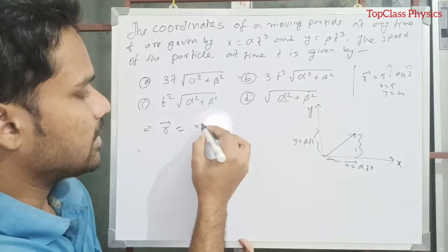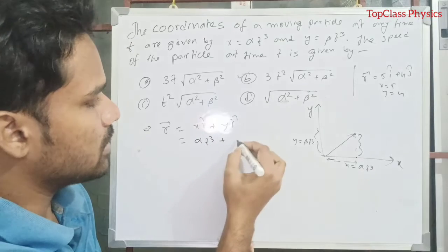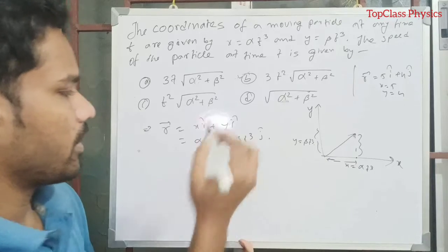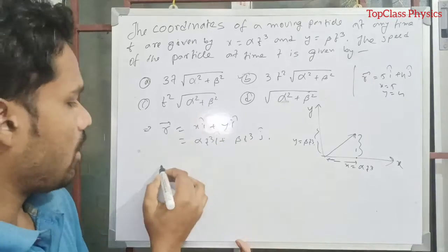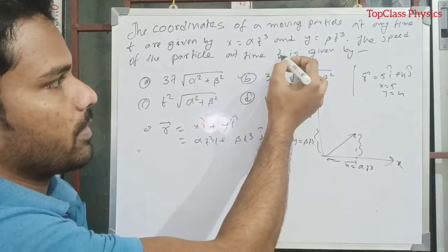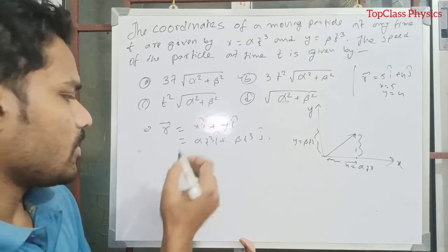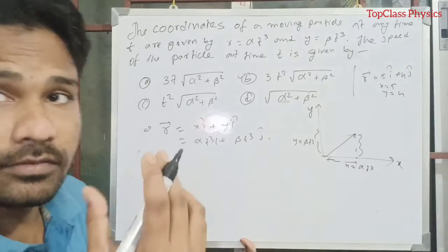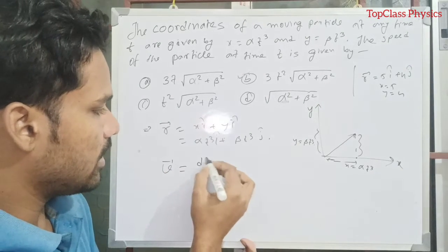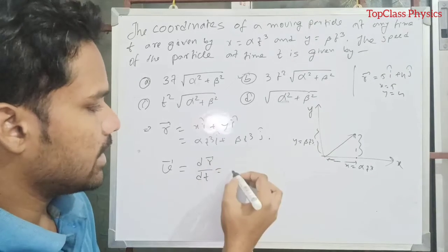That is X i cap plus Y j cap, that means alpha T cube i cap plus beta T cube j cap. This is the position vector. Now they ask the speed of the particle at time T. So to find speed, let's find the velocity first.